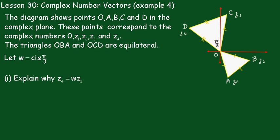Lesson 30 Complex Number Vectors Example 4. The diagram shows points O, A, B, C and D in the complex plane.